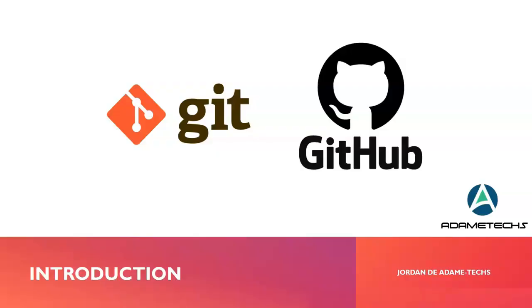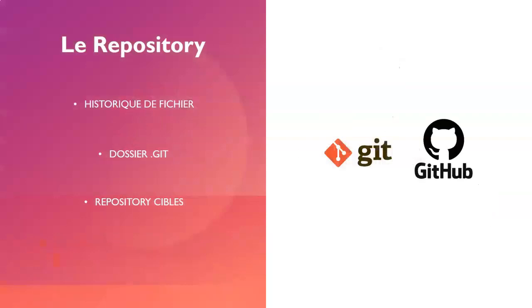Version-controlled files and their history are considered as a repository. While we usually consider a collection of files and folders during a merge as a repository, in fact a repository is rather a history of files. Normally, in the root folder of your project, there will be a .git folder — a folder containing the repository.